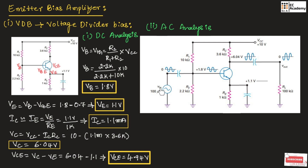The AC source is a small sinusoidal voltage with DC level 0. The small input AC signal is superimposed on the DC level of the base voltage, which is 1.8 volts. The collector voltage is amplified and it is an inverted AC voltage, which is superimposed on the DC level of the collector voltage, found to be 6.04 volts. On this DC voltage, the AC collector voltage will be superimposed.